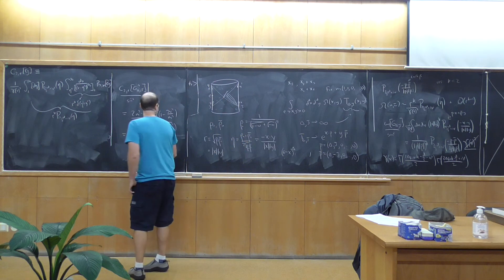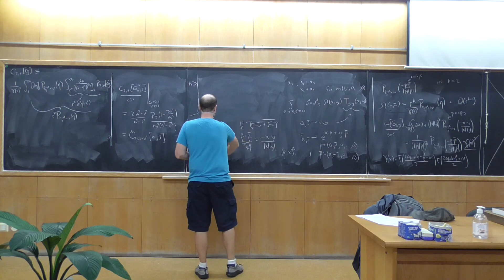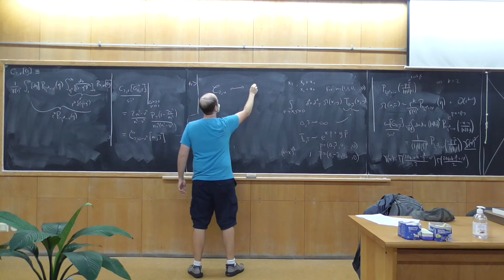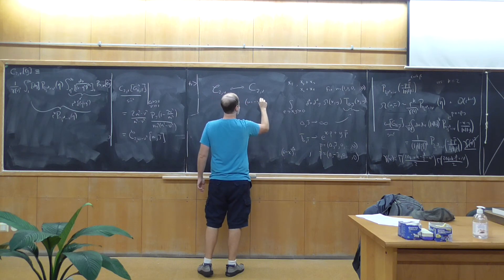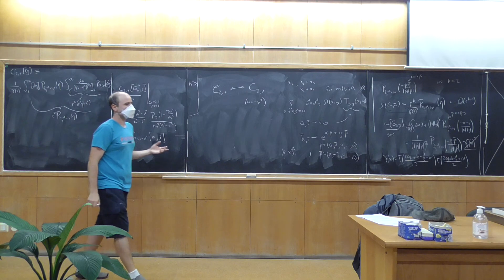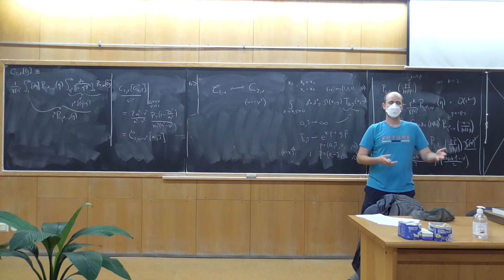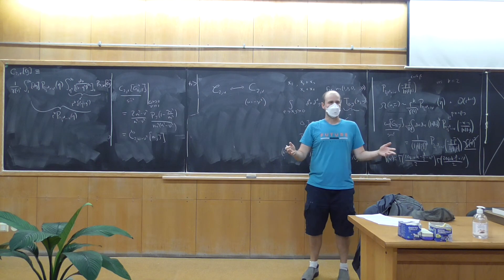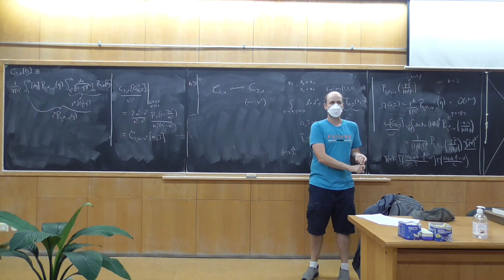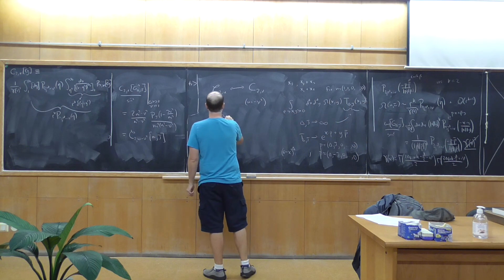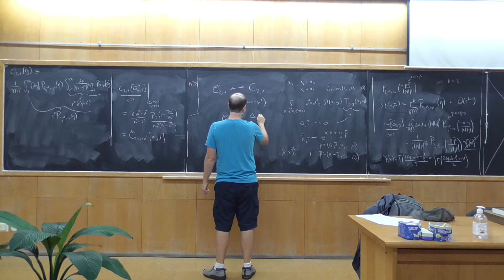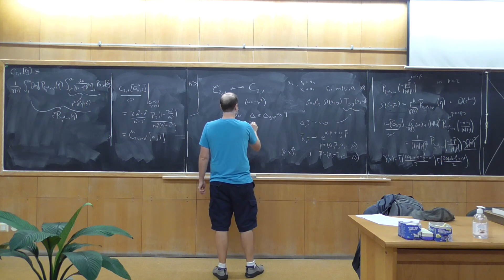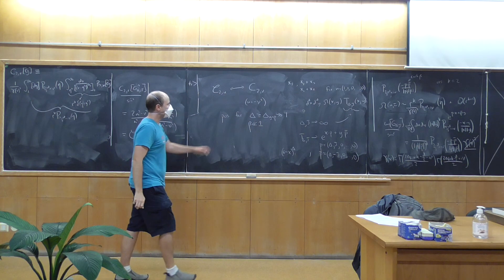When you evaluate C2U on the leading family and sum up the contributions, you find that C2U on that leading family agrees with the flat space sum rule up to 1/delta_gap corrections. So both the heavy part and the light part of the holographic sum rule agree with flat space. This means the flat space sum rule corresponds to this dispersive functional C2nu with U = −nu².